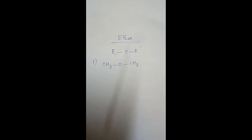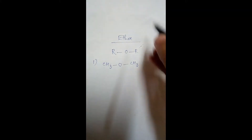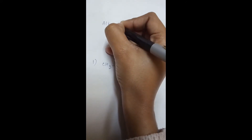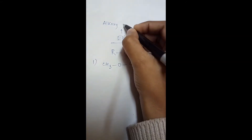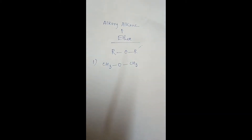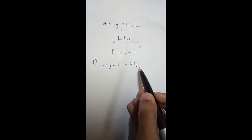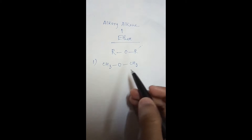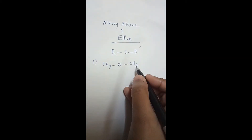In ether, the general formula to find the IUPAC name is alkoxyalkane. Here the alkyl group is methyl, so the name will be methoxymethane.